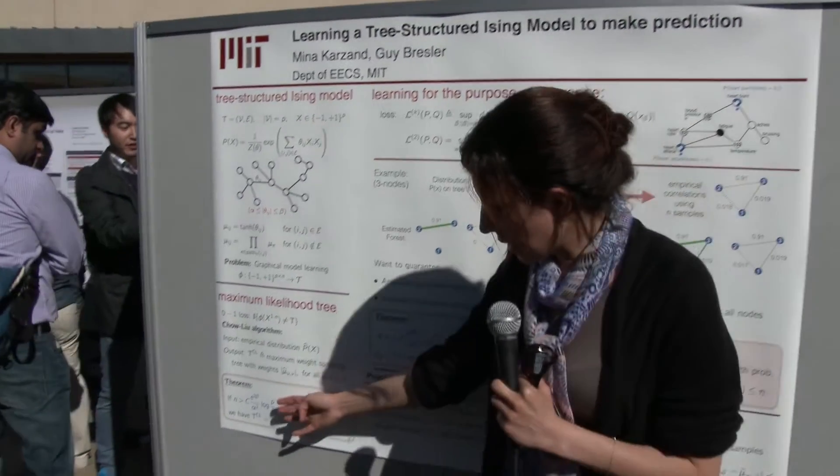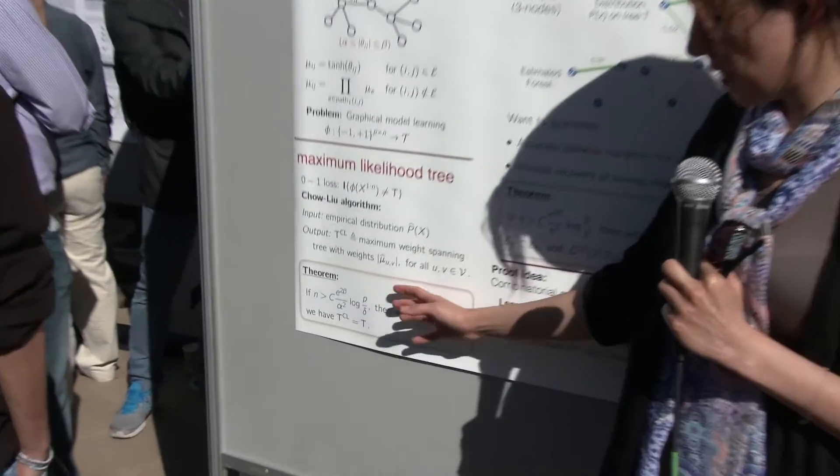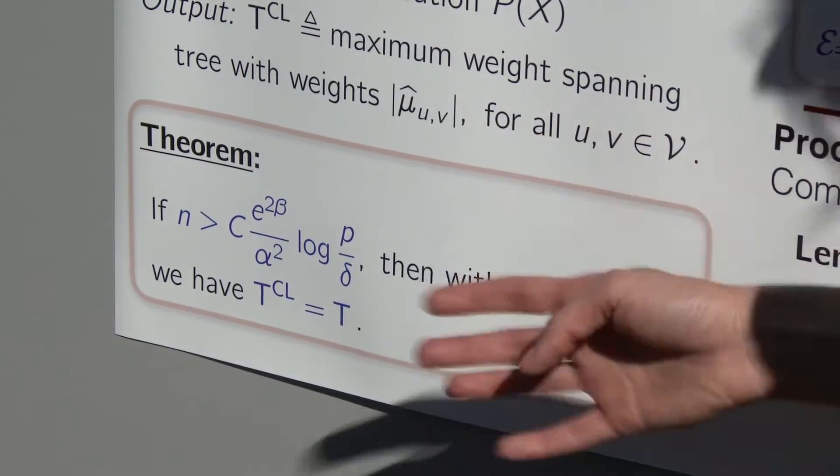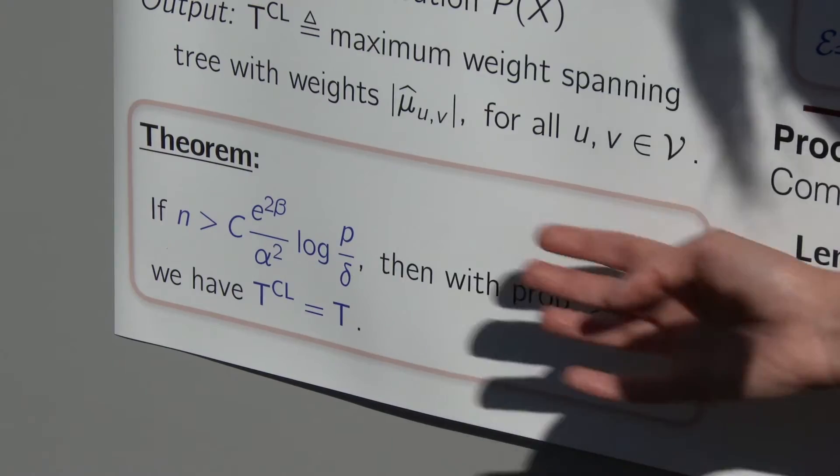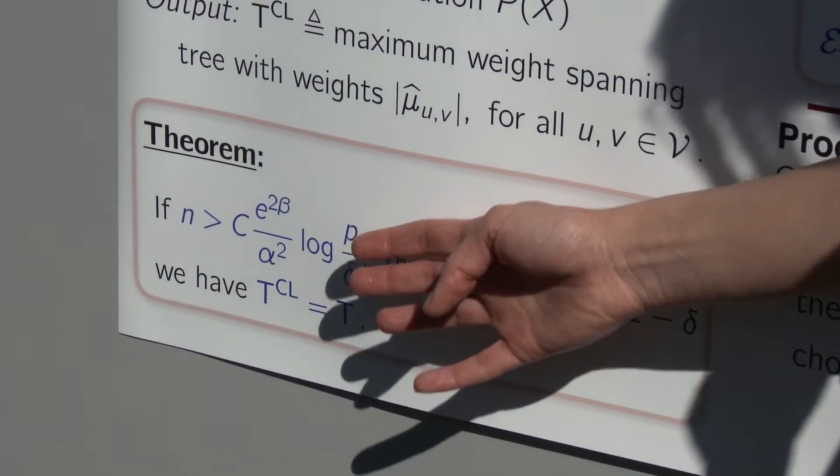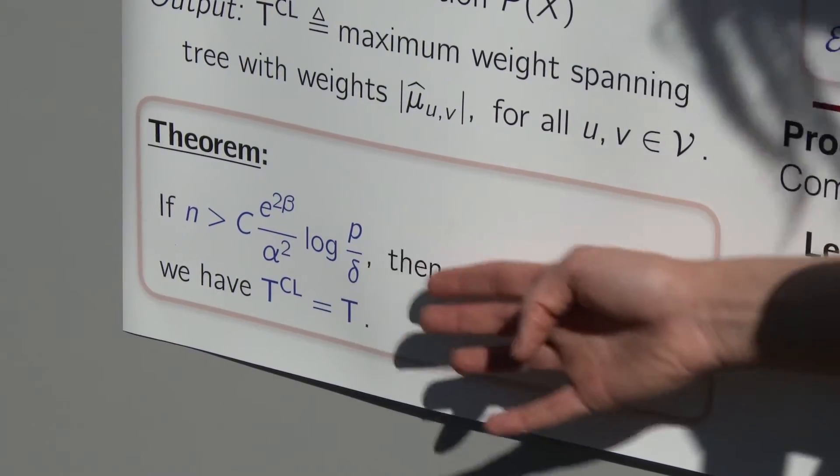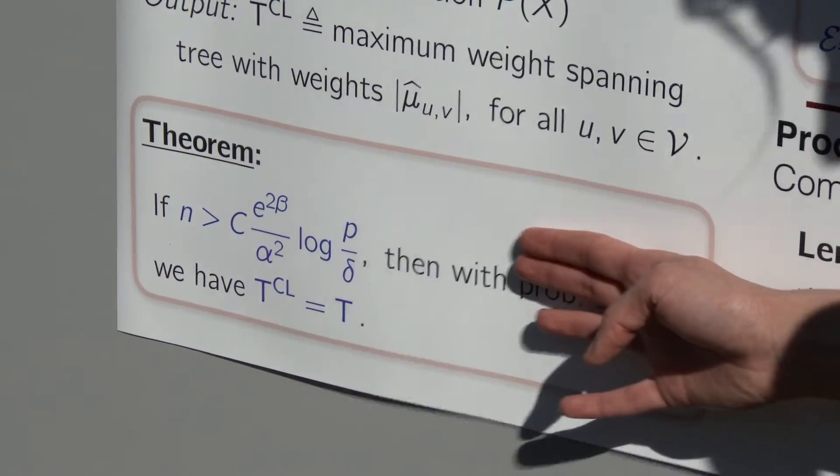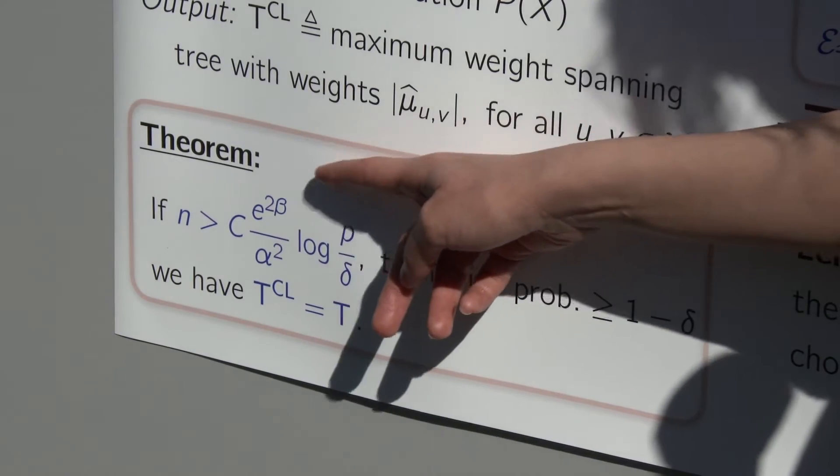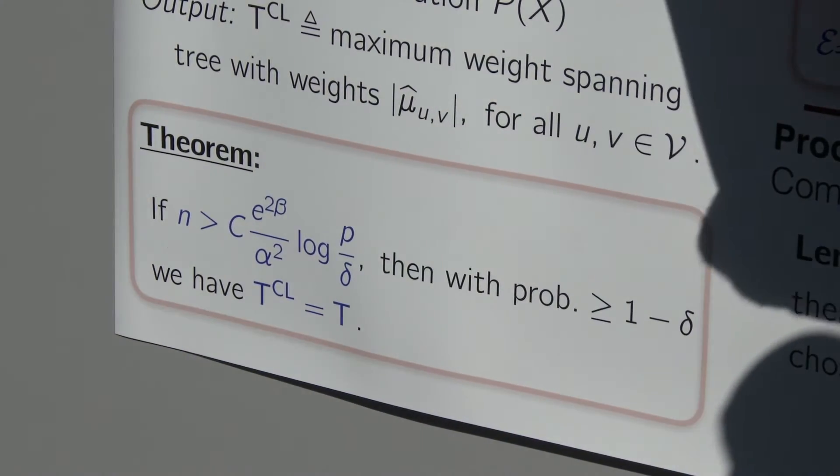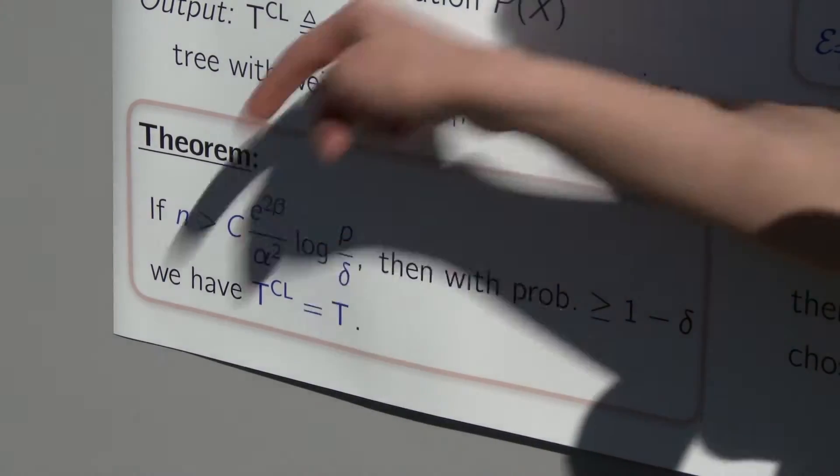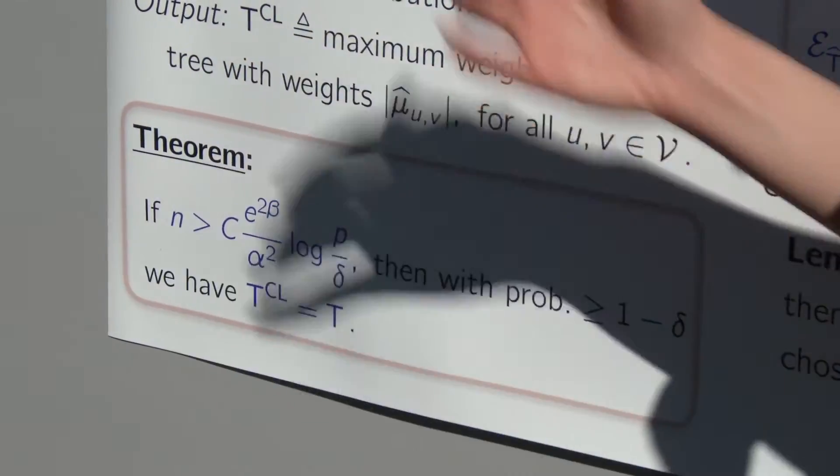Just looking at this, we have the converse bound for this theorem, which shows that if the number of samples is smaller than this number, then we cannot guarantee the correct tree recovery. Looking at this sample complexity, it's good that it's logarithmic in the number of variables, which is p, but you can see that as beta is growing, the number of samples is growing, and as alpha is decaying, the number of samples is growing up.